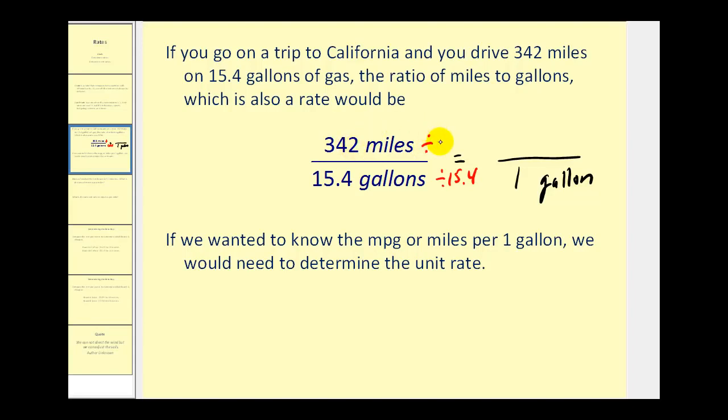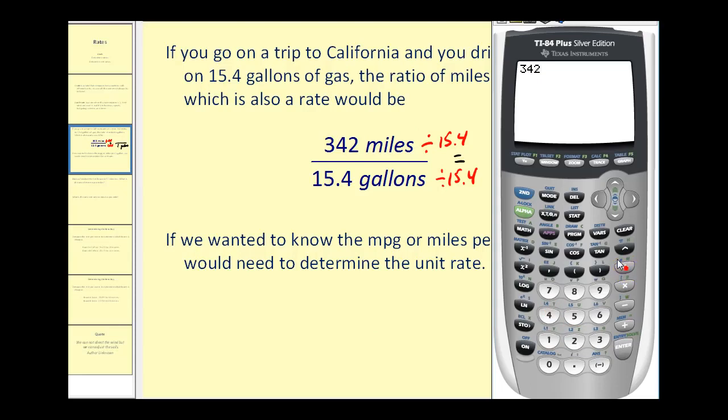If we take 342 miles and divide by 15.4, we'll have the number of miles per one gallon. Let's go ahead and do that. 342 divided by 15.4. We'll go ahead and round this to the nearest tenth, so it's approximately 22.2 miles per one gallon.